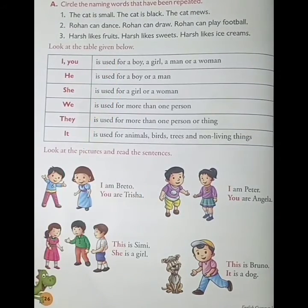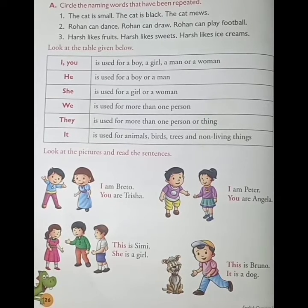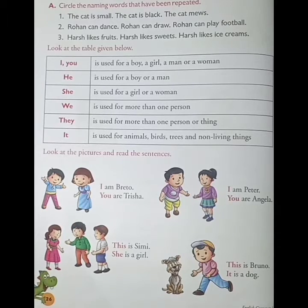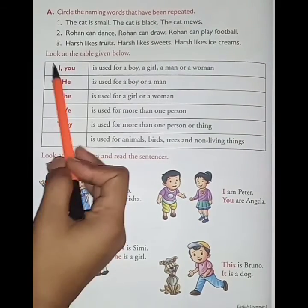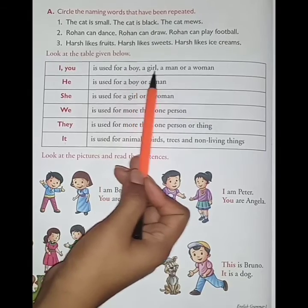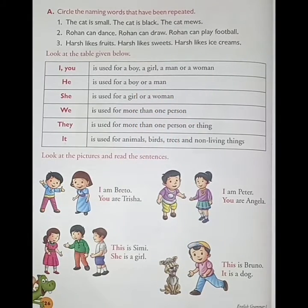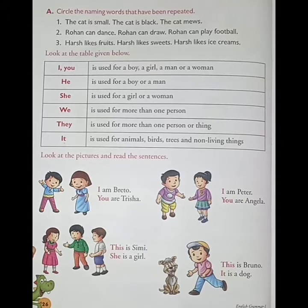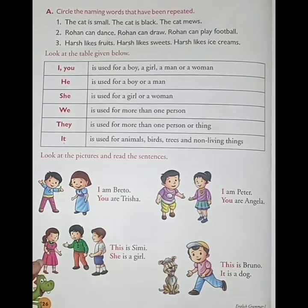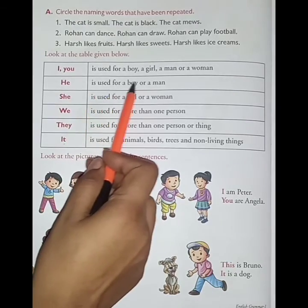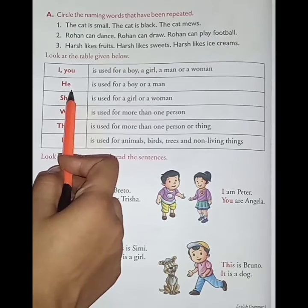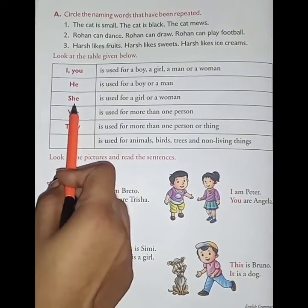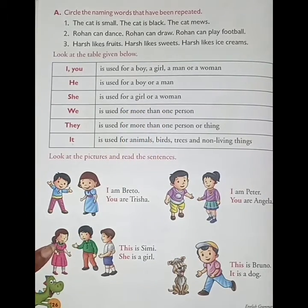Now look at the table given below. Some pronouns are given with their uses. I and you are used for a boy, a girl, a man, or a woman. He is used for a boy or a man. She is used for a girl or a woman.